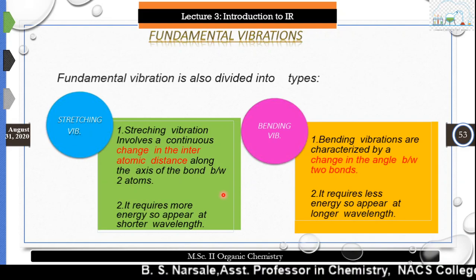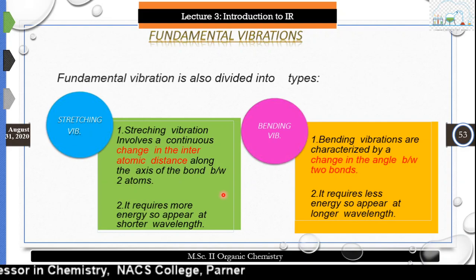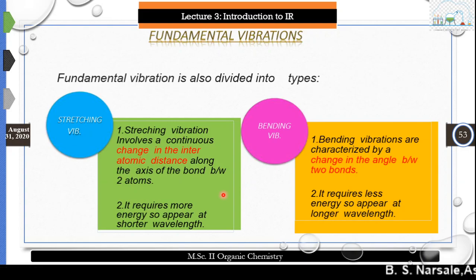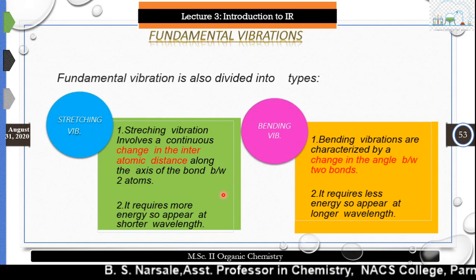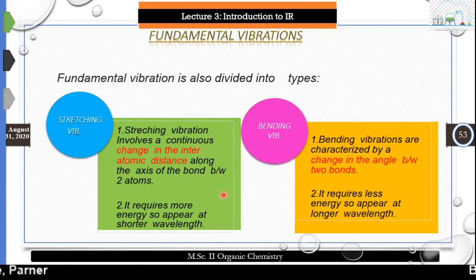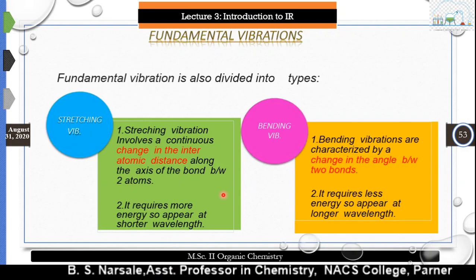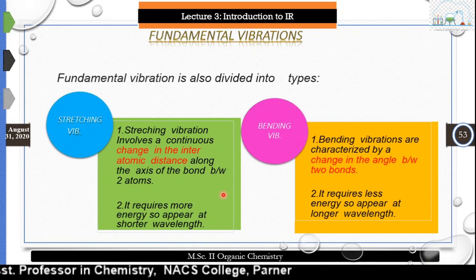Since stretching vibration requires more energy, it appears at a shorter wavelength — more energy means less wavelength. The second type is bending vibration. Bending vibration is a change in the bond angle between two atoms of a molecule. Such vibrations require somewhat less energy and therefore appear at a longer wavelength. To summarize: bond length changes appear at shorter wavelength, and bond angle changes appear at longer wavelength.